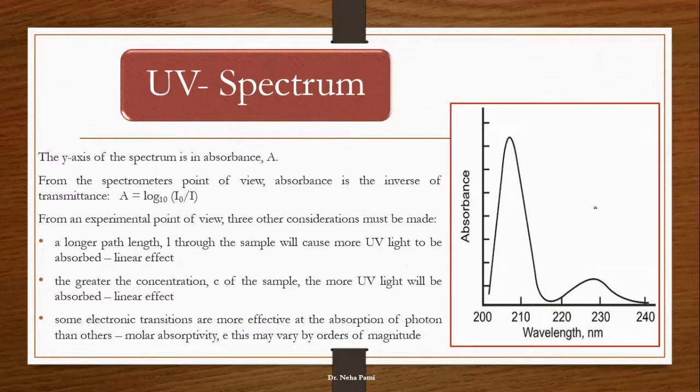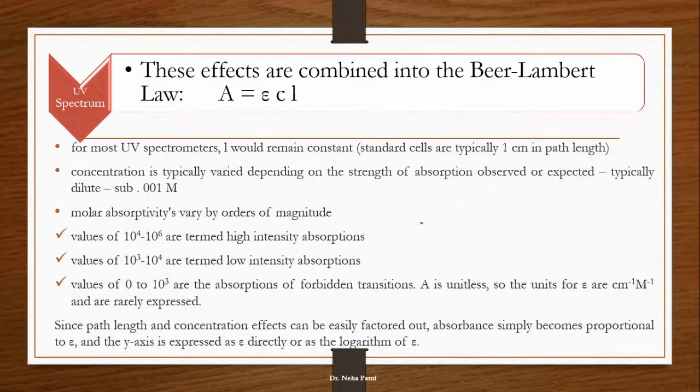Now coming to how does a UV spectrum look like - after the detector, the graph you will get will look something like this. Absorbance basically is log of I0 by I. Based on that, this graph you have got. Absorbance, based on Lambert-Beer law, can be represented as epsilon times c times L. If the longer path length is there, sample will cause more UV light to be absorbed. Similarly, if greater the concentration, more UV light will be absorbed. Linear effect is there. Molar absorptivity is having a very important role in it. Molar absorptivity value is going to affect it.